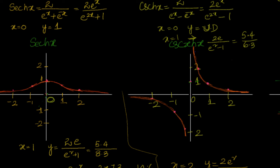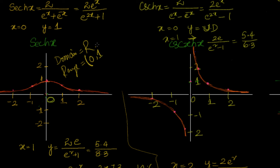Now let's look at the domain and range of these functions. For sech(x): are there any restrictions on x? No, so the domain equals R. The range: y values go from 0 to 1. It can never be 0, so the range is the interval (0, 1] — 0 is exclusive, 1 is inclusive.